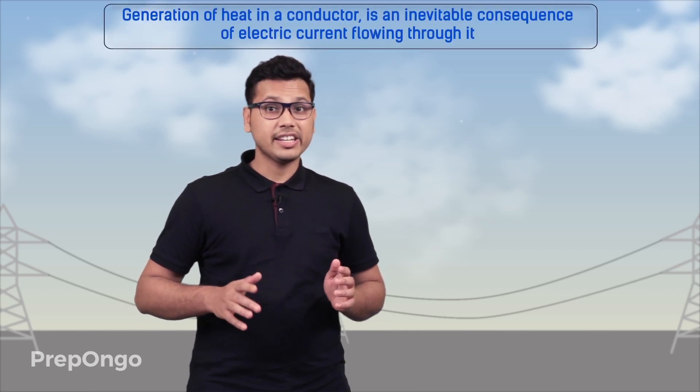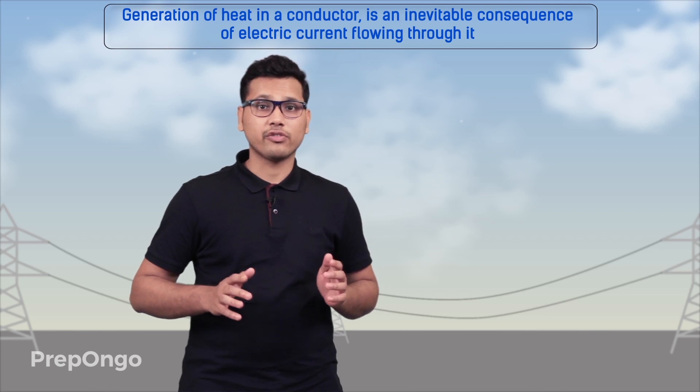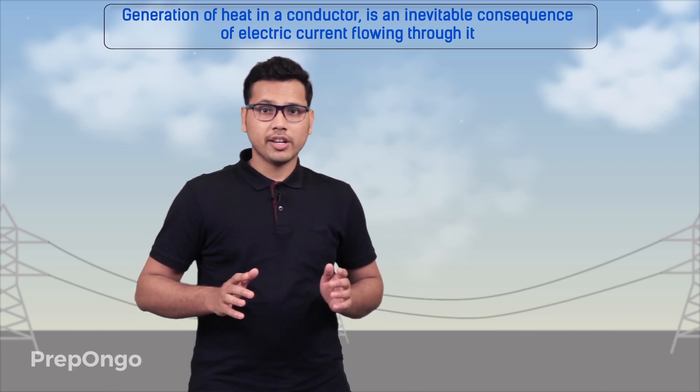In a previous video we had seen that the generation of heat in any conductor is an inevitable consequence of the electric current flowing through it. Now we know that every appliance is linked with some or other resistance. So the generation of heat through any conductor cannot be avoided. In many cases this heat generation is undesirable as it wastes useful electrical energy, which is converted into heat and ultimately goes to waste.